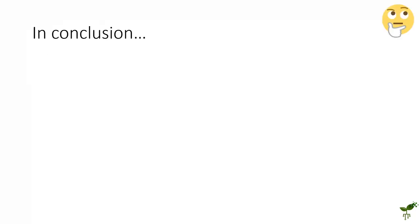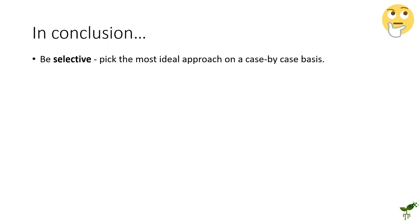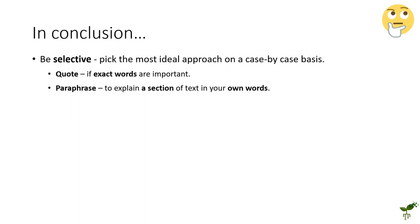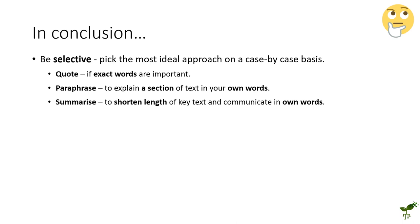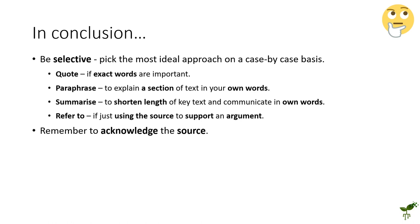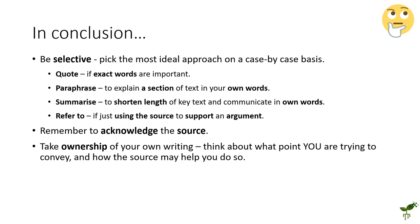In conclusion, try to pick the tool that best suits the purpose — be selective and pick the most ideal approach for the context. Quote if the exact words are important. Use paraphrasing if you need to explain things in your own words. Summarize if you need to shorten quite a bit and explain things in your own words. And simply refer to a source if you're just using it to back yourself up. Always remember to acknowledge your source, but the key thing is to take ownership of your writing — pick the approach that works best for you, your style of writing, and what is required of the task.